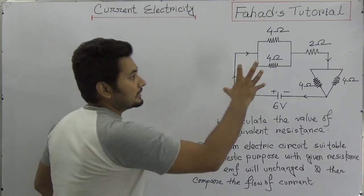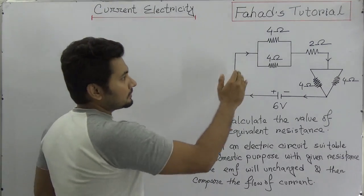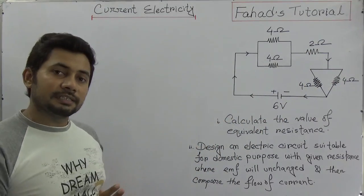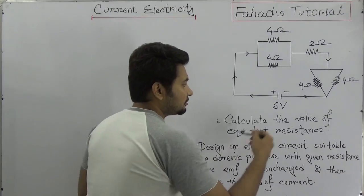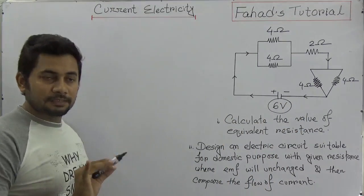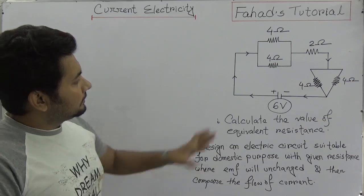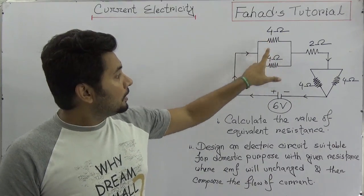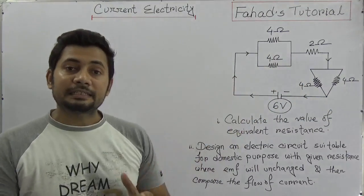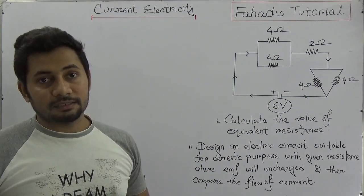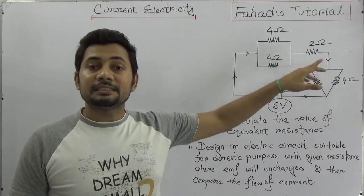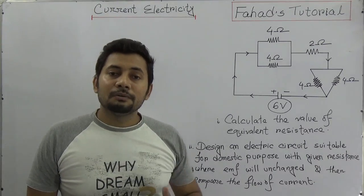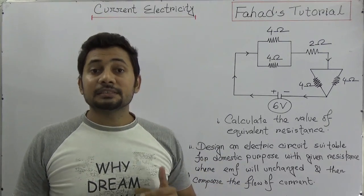So let's focus on this circuit. Here, 1, 2, 3, 4 and 5 resistances are there, and this is a closed circuit. The electromotive force given is 6 volt. In this circuit, 4 ohm, 4 ohm, 1, 2, 3 and 4 are connected in parallel, and a 2 ohm resistance is connected in series. I hope you know what parallel and series connections are.